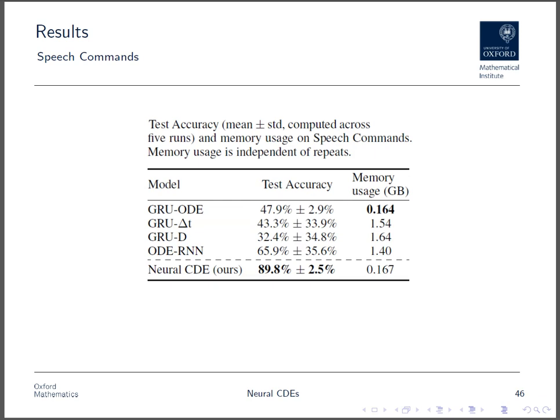Next, we consider a regularly sampled dataset, the speech commands dataset, corresponding to audio recordings of people saying the words yes, no, left, right, and so on. We see much the same story as before. Neural CDEs outperform the other models whilst using an order of magnitude less memory. This is because the other models have very high variances, because sometimes they simply fail to train, which we are unable to resolve by tweaking the optimization hyperparameters. In contrast, the neural CDE trains well every time, and seems to be robust to the choice of optimization hyperparameters. This isn't a phenomenon we understand yet.